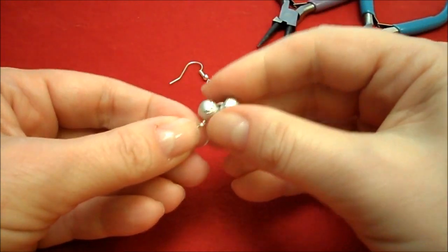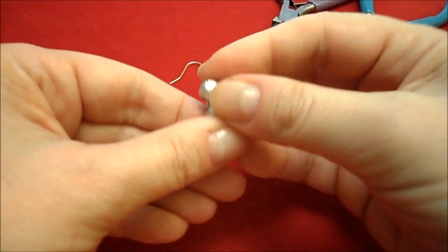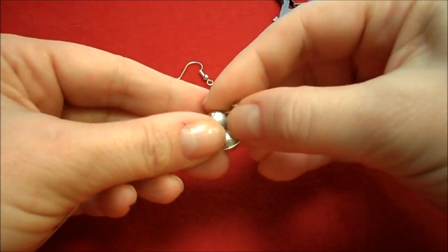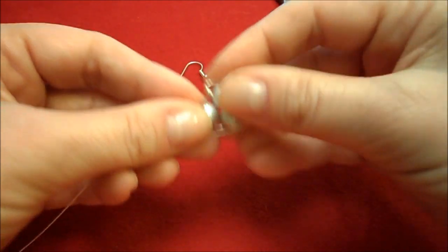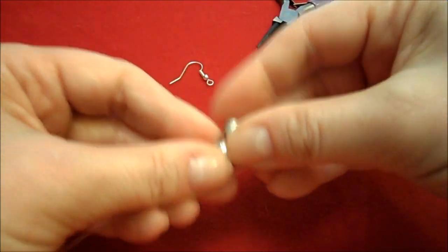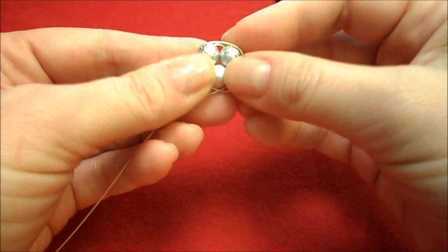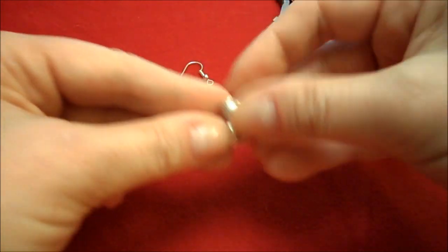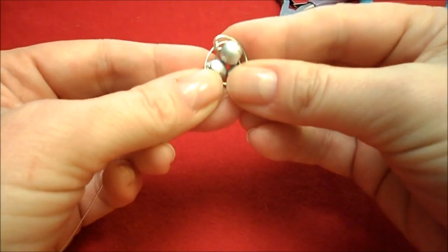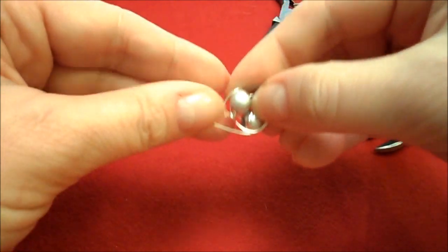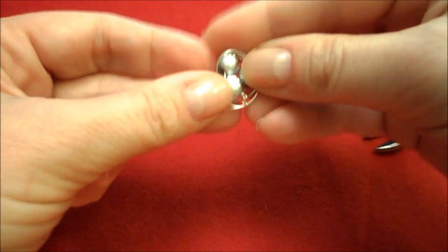So now you have your 3 little eggs and then what you want to do is start rolling your beads on the wire to start forming the nest. There's no hard or fast rules to this. You want to do it in a circular motion.